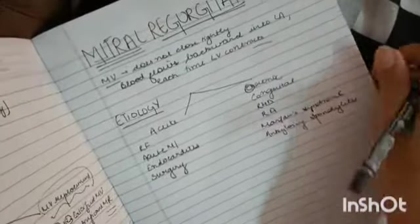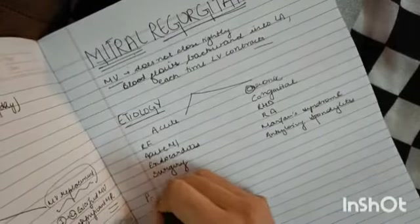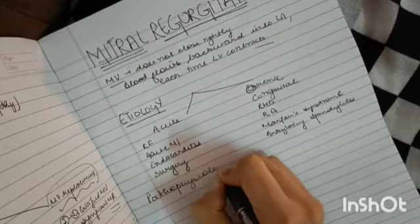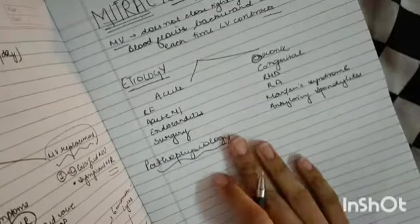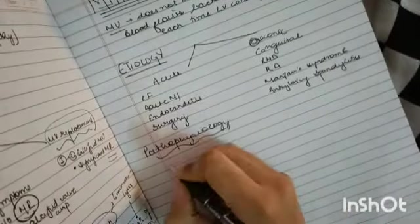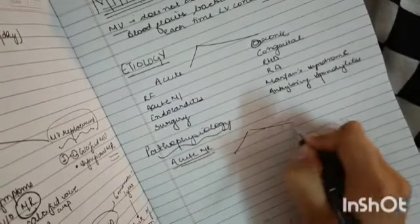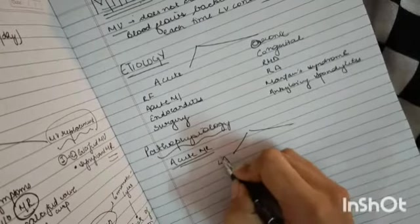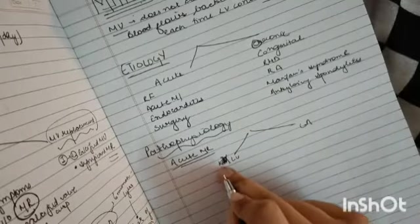Now we will understand how this process happens. We will discuss the pathophysiology and how it affects and why it is considered as a defect. I'll make you understand in two headings. The first one we will take is acute mitral regurgitation. We will see the effects on left atrium and left ventricle.